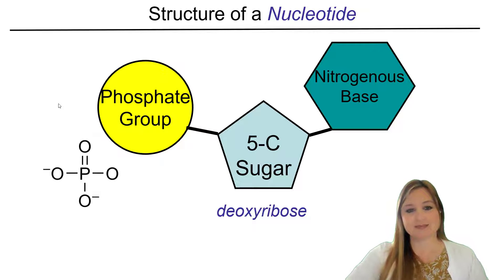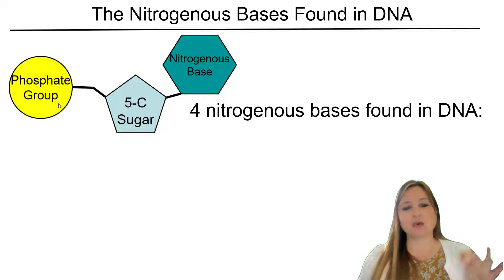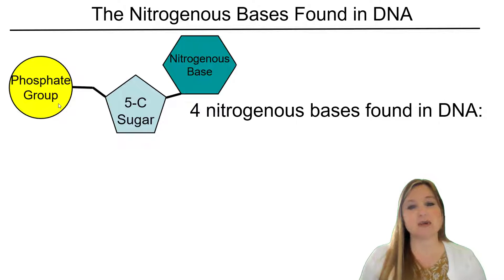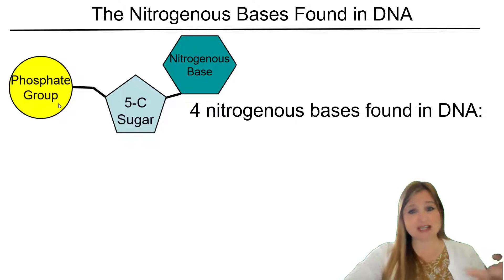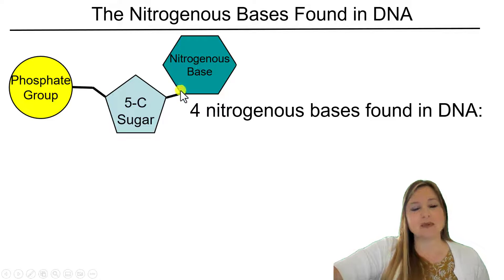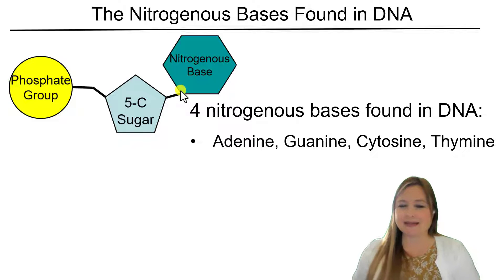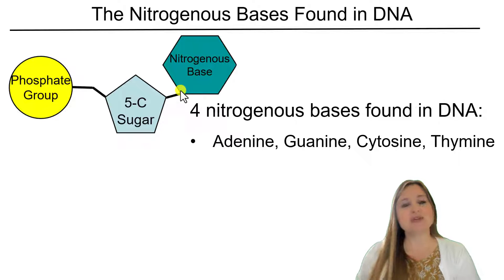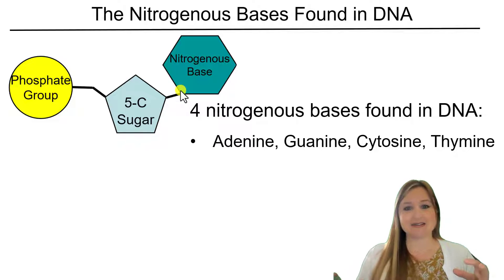There are four different bases that can be found in nucleotides. So we actually have four different flavors of nucleotides in DNA. The difference between those nucleotides is the type of base that's there — all four are going to have that phosphate group bonded to the sugar deoxyribose, and then it can be bonded to one of four different bases: adenine, guanine, cytosine, and thymine. Those are the four different bases found in the nucleotides of DNA.